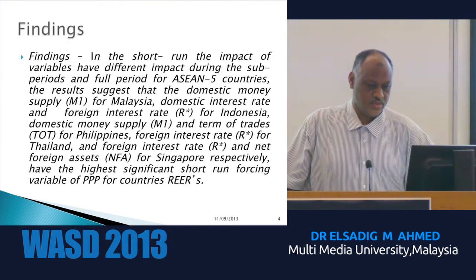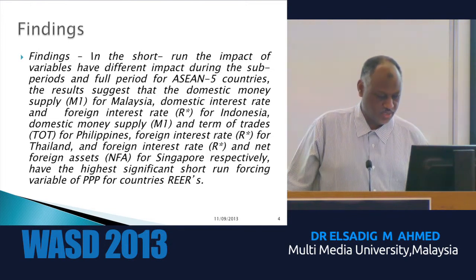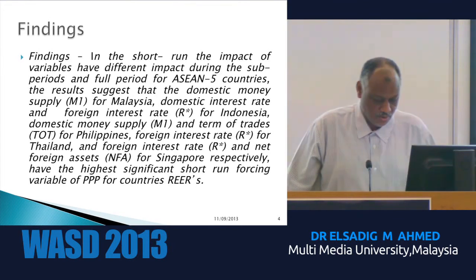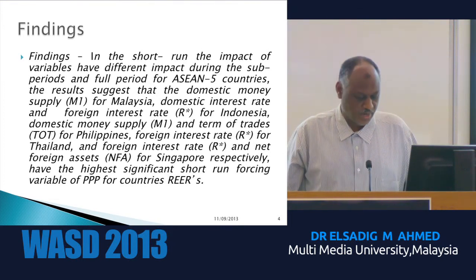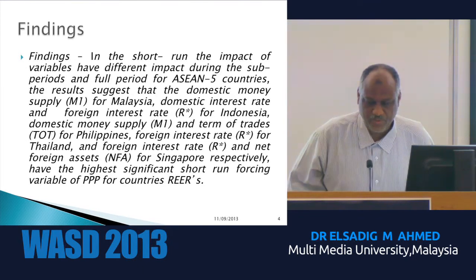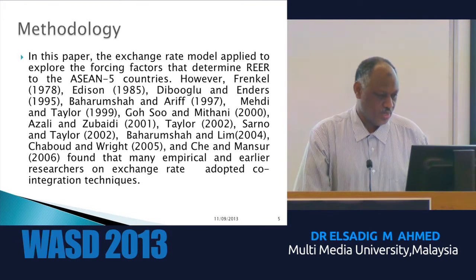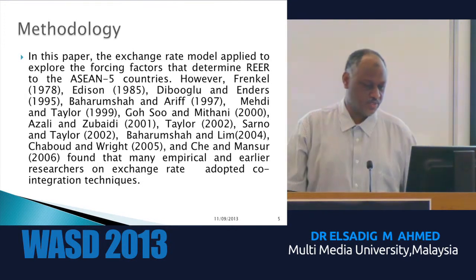The main findings show that in the short run, the impact of variables differs across sub-periods. The domestic money supply is significant for Malaysia; domestic and foreign interest rates for Indonesia; domestic money supply and terms of trade for Philippines; foreign interest rate for Thailand; and foreign interest rate and net foreign assets for Singapore. These are the highest significant short-run forcing variables for purchasing power parity. Purchasing power parity reflects the ability of people to purchase goods with their money.